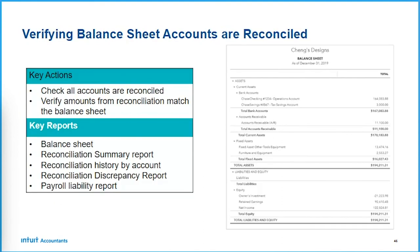Let's dig deeper into verifying balance sheet accounts are reconciled. Within QuickBooks Online Accountant, you can check that those things are reconciled. We also have the ability to create bundles of reports. You could create a report bundle called Balance Sheet Account Reconciliation containing your balance sheet, reconciliation summary, reconciliation history, discrepancy report, and payroll liability report. When you go to the customized report section, just click that bundle and run it — you've got all your key reports ready.